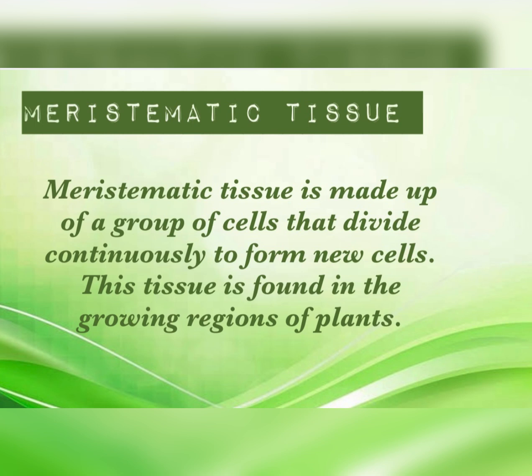Meristematic tissue is made up of a group of cells that divide continuously to form new cells. They are found in the growing regions of plants and are responsible for the growth of the plants. Plants grow throughout their life.